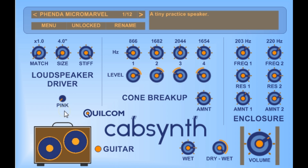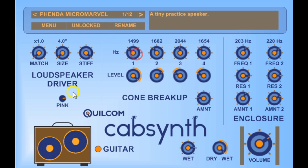This little pink knob injects pink noise into the input of the chain, and you might find it useful when adjusting the controls, so you can hear the effect, or you could just add a little bit of pink noise to your guitar sound.